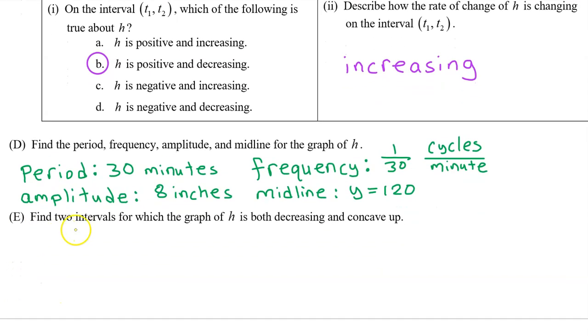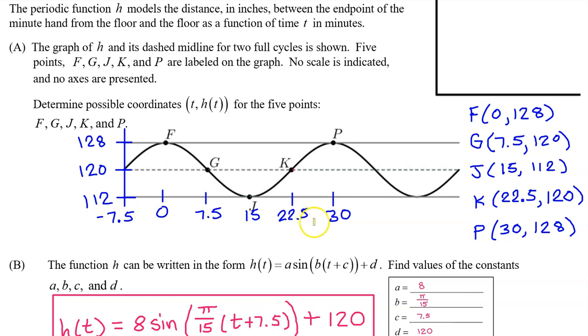Part E, find two intervals for which the graph of h is both decreasing and concave up. We are looking for intervals where h(t) is decreasing and concave up. Let's start with decreasing. H(t) is decreasing on this interval and also on this interval. H(t) goes from concave down to concave up at t equals 7.5. So h(t) is concave up and decreasing on this interval from 7.5 to 15.